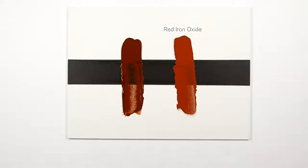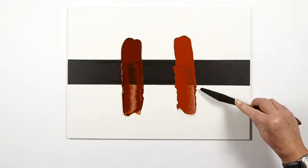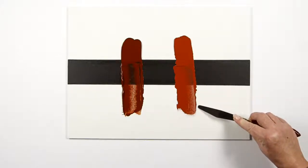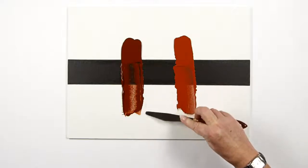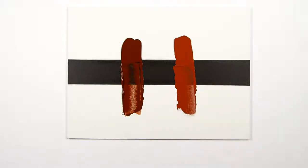But here we see the undertone of the red iron oxide appears redder and quite cold in undertone compared to the much warmer, yellower undertone of the burnt sienna.